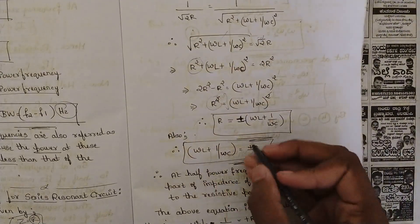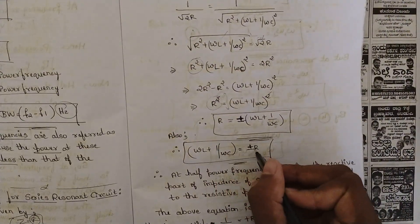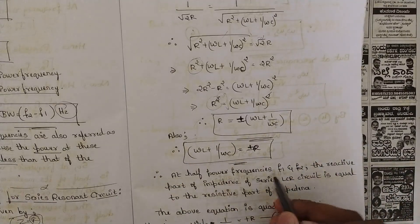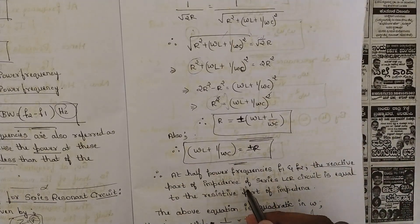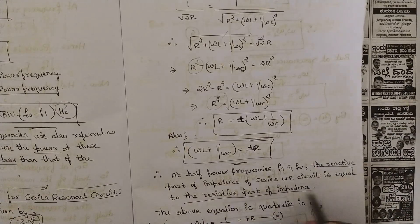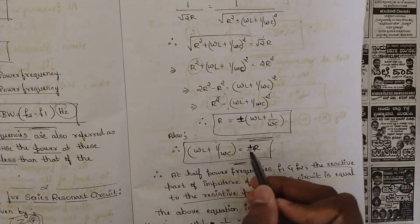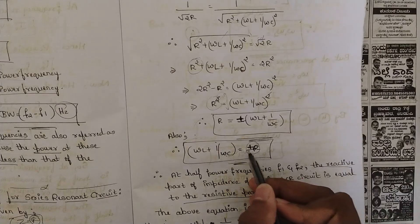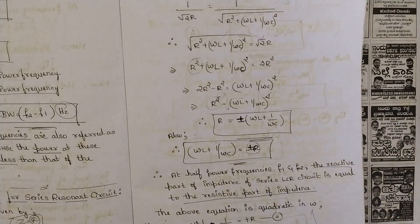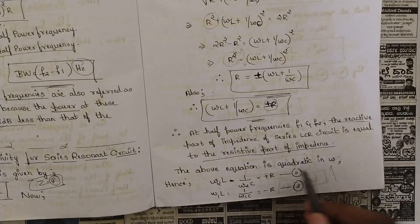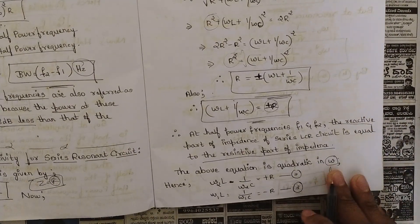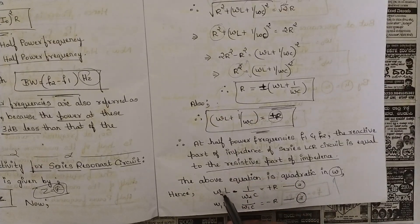This says that at half-power frequencies f₁ and f₂, the reactive part of impedance of the series LCR circuit equals the resistive part. That is: ωL + 1/ωC = ±R (ignoring sign). This is one important condition. Also, the above equation is quadratic in ω.